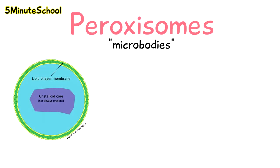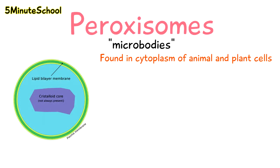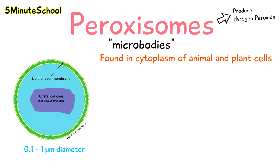Peroxisomes are also known as microbodies. They're organelles which are found free-floating in the cytoplasm of animal and plant cells. The reason they're called peroxisomes is because they produce hydrogen peroxide. They're about 0.1 to 1 micrometers in diameter.